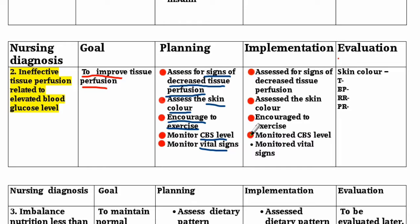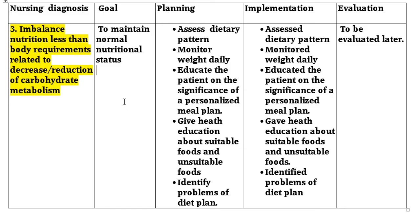Evaluation: skin color, blood pressure, respiratory rate, and pulse rate. Nursing Diagnosis No. 3: Imbalanced nutrition less than body requirements related to decrease or reduction of carbohydrate metabolism. Goal: to maintain normal nutritional status.